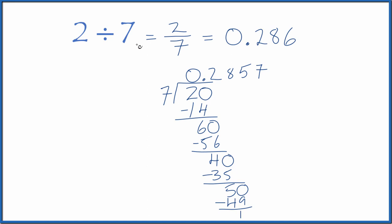So 2 divided by 7, that gives us the fraction 2 sevenths or the decimal 0.286, which is rounded. If you need more digits after the decimal point, you can just keep dividing. This is Dr. V. Thanks for watching.